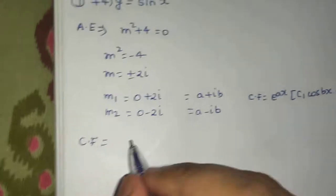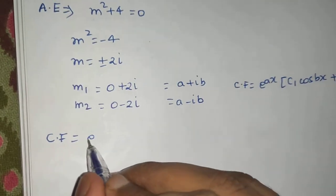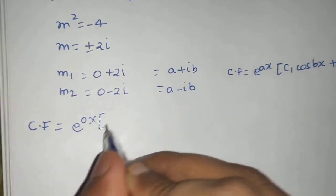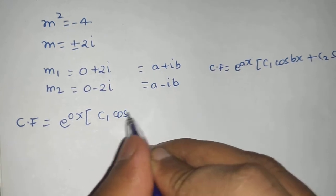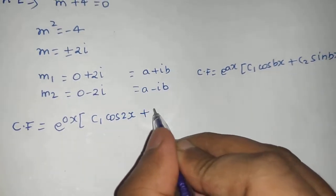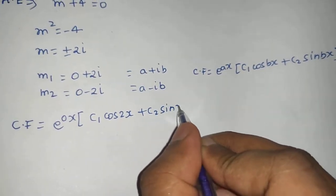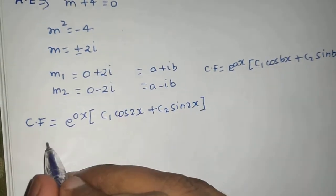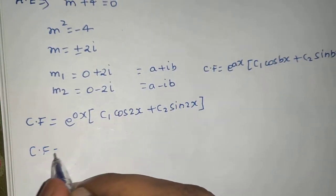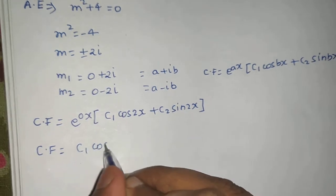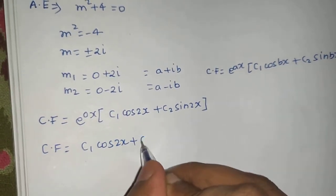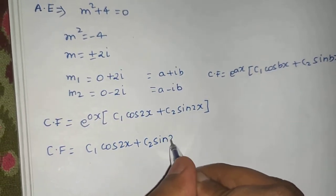So we will follow that here also. So e power 0x, c1 cos 2x plus c2 sin 2x. I hope you understand it well. So e power 0x is simply 1, so c1 cos 2x plus c2 sin 2x.